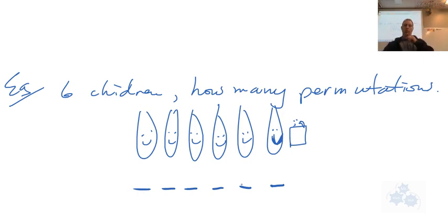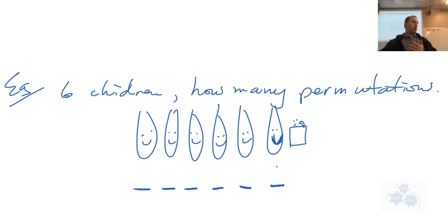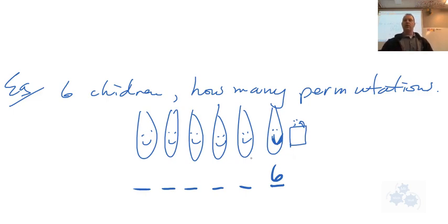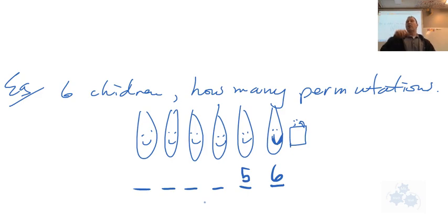There are six spots and six kids. How many kids could be first in line? There are six of you, so the first one in line could be any one of you. So there are six choices for the first position. Once the first person is placed — let's say it's Sarah — there are five of you left, so there are five choices for the second position. Two of the six are placed, so there are four left for the third position.